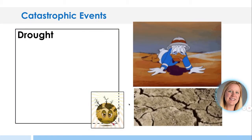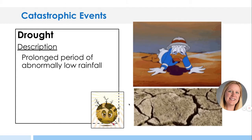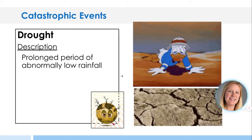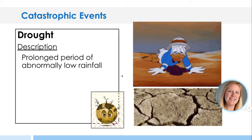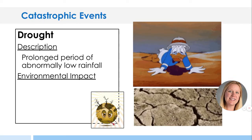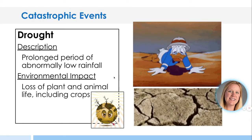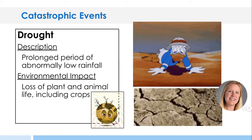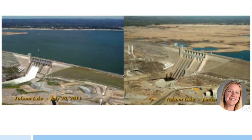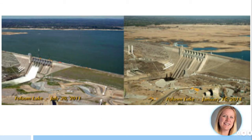Let's go opposite of having a lot of precipitation — what if there's not a lot of rain? Prolonged periods of abnormally low rainfall is a drought. The Dust Bowl in the United States was caused because we did not rotate our crops properly, using up all the nutrients in the land and letting it dry out when there wasn't any rain. So there's loss of animal and plant life, including crops. Here is Folsom Lake in 2014 compared to 2011 after a drought where there just wasn't a lot of rain in that area.